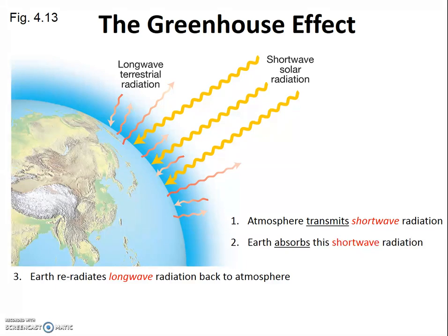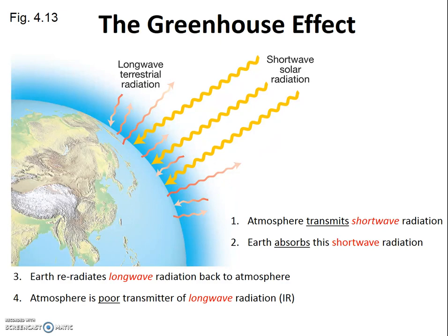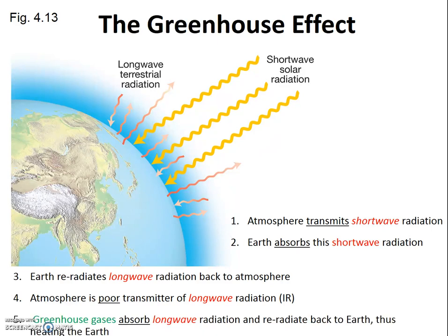The troposphere does not transmit longwave radiation nearly as well. In fact, there are several greenhouse gases — water vapor, carbon dioxide, methane, and nitrous oxide — in the troposphere that are very good at absorbing and re-emitting longwave radiation.